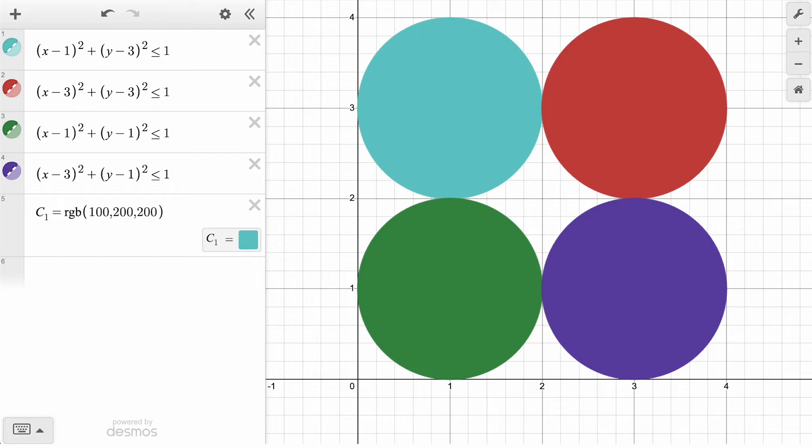Now if we don't know the exact color code we want, we can use sliders to experiment with different colors. Let's define a second color, C2, using the RGB function. But instead of three numbers, we will use the variables R, G, and B.